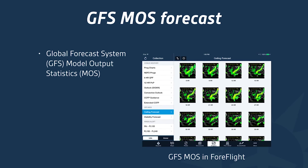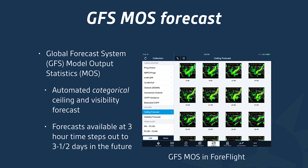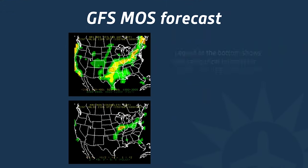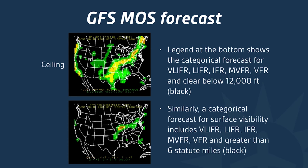The next product is the GFS MOS forecast — Global Forecast System Model Output Statistics — an automated categorical ceiling and visibility forecast available at three-hour time steps out to three and a half days. The legend shows flight categories: very low IFR, low IFR, IFR, marginal VFR, and VFR. Areas shown in black indicate clear below 12,000 feet. A similar categorical forecast is offered for visibility as well.